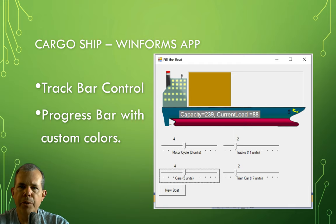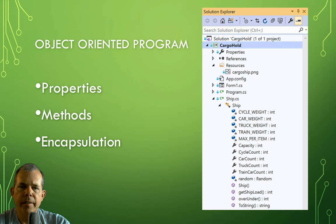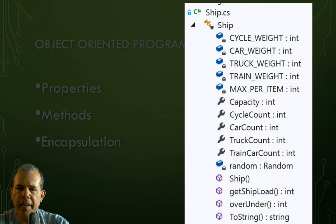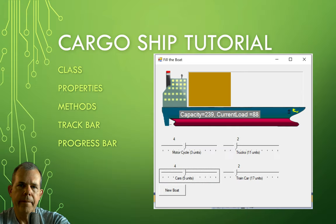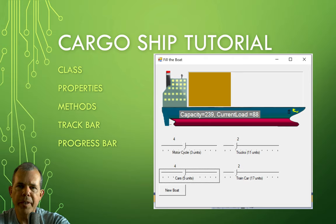We've created the console version of the application — not very pretty, but functional. The cargo hold application shows we have a class called Ship with all of its properties. Now you should understand a little more about a game object called Ship. In the next video, we'll create the graphical user interface version called Fill the Boat.